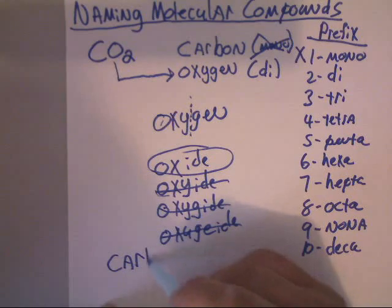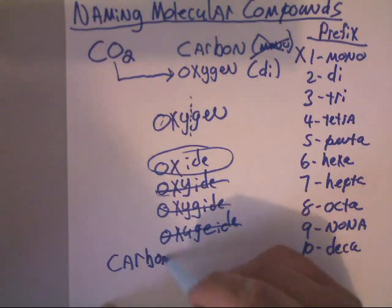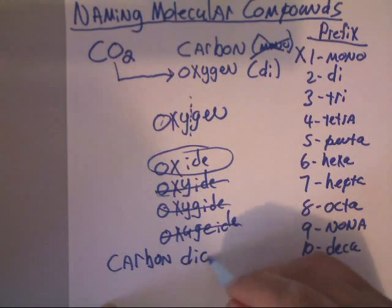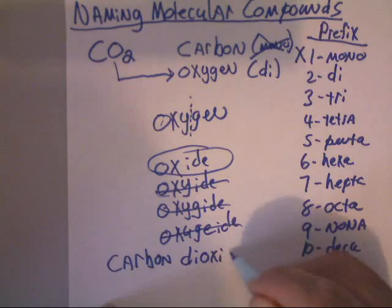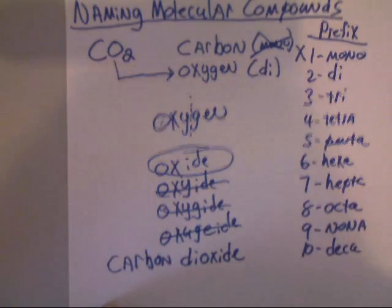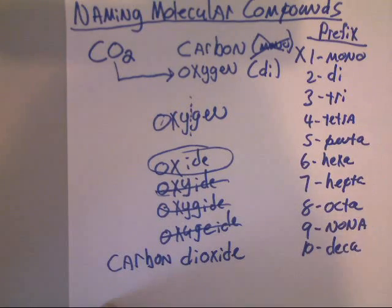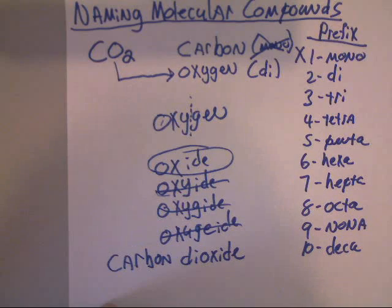So when we finally name this compound, it's named carbon dioxide. Di-oxide — carbon dioxide. And that's how you name a molecular compound. We'll do another one in the next video.